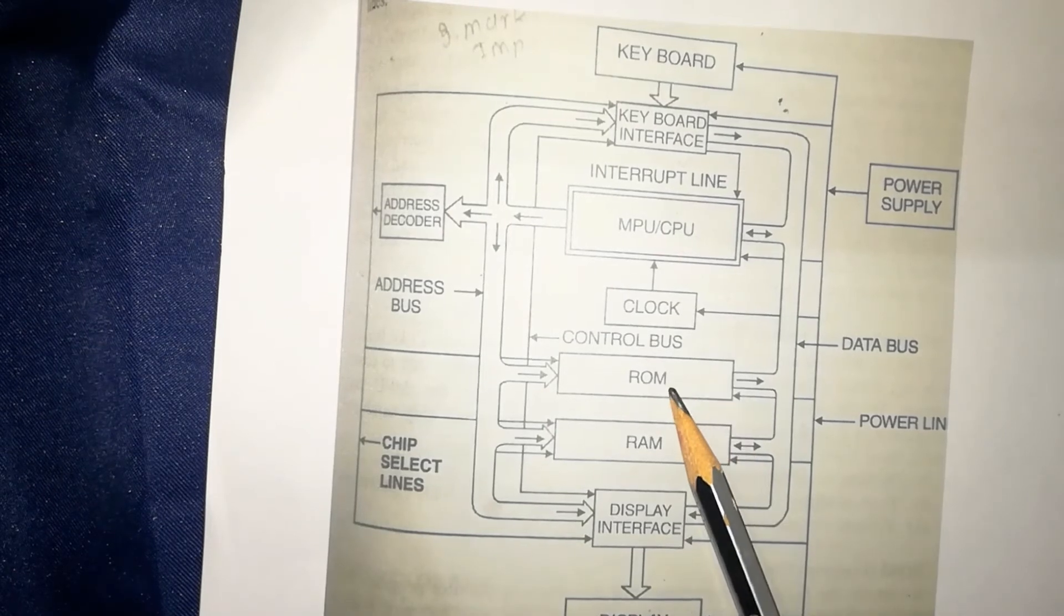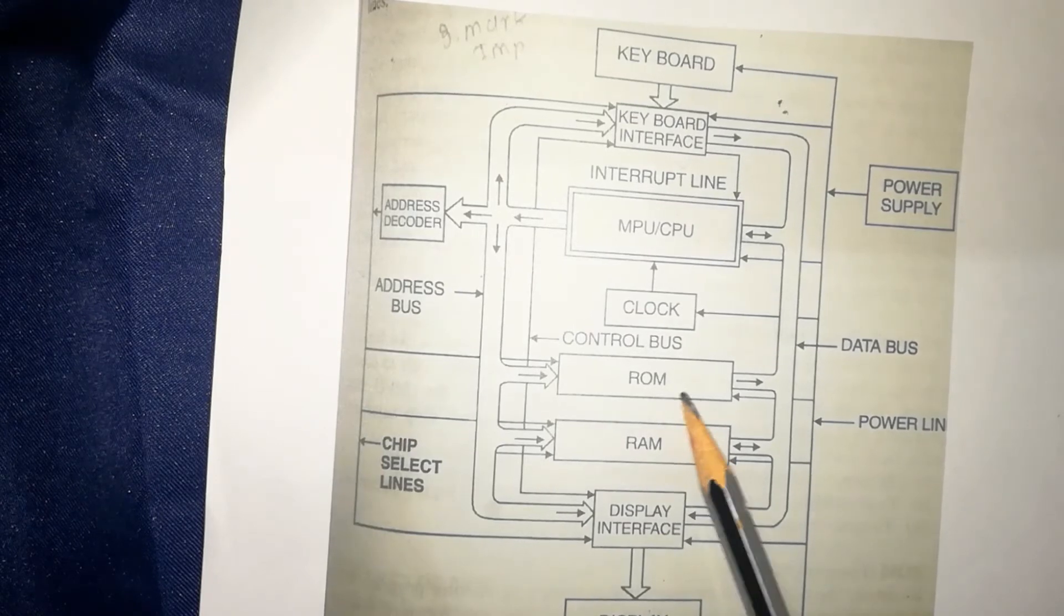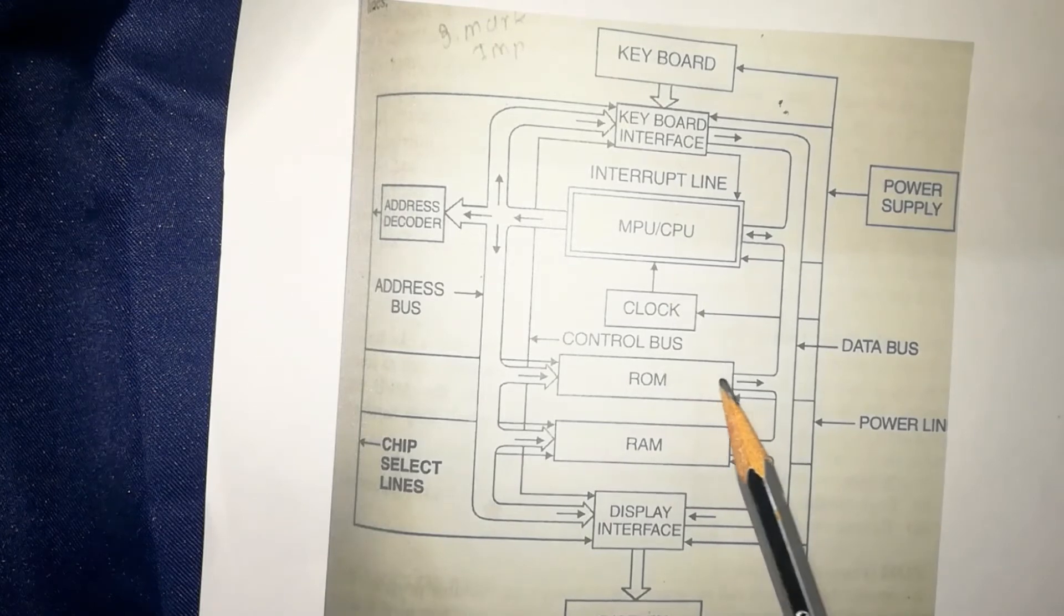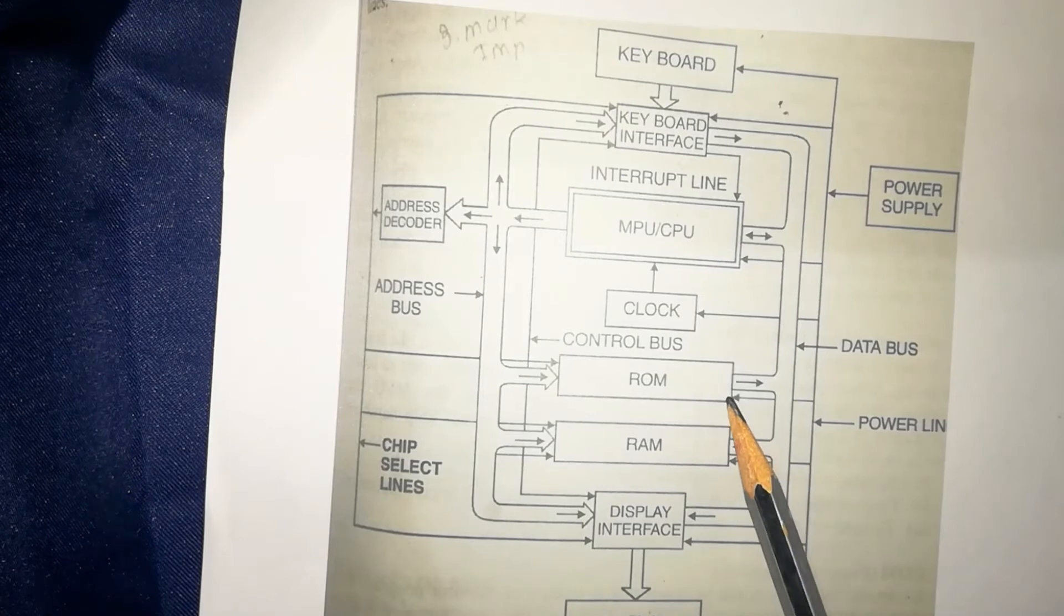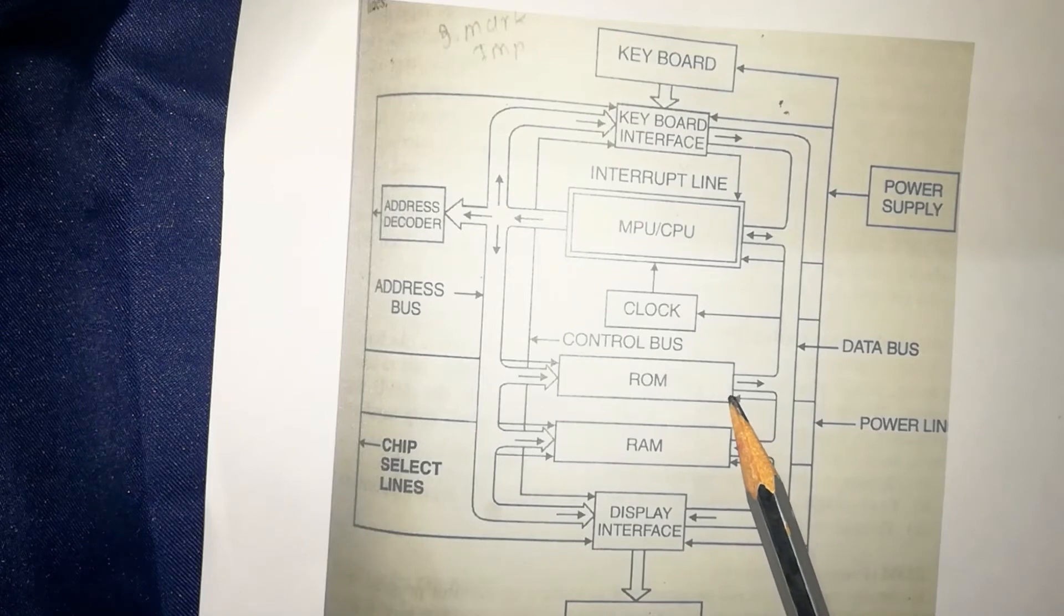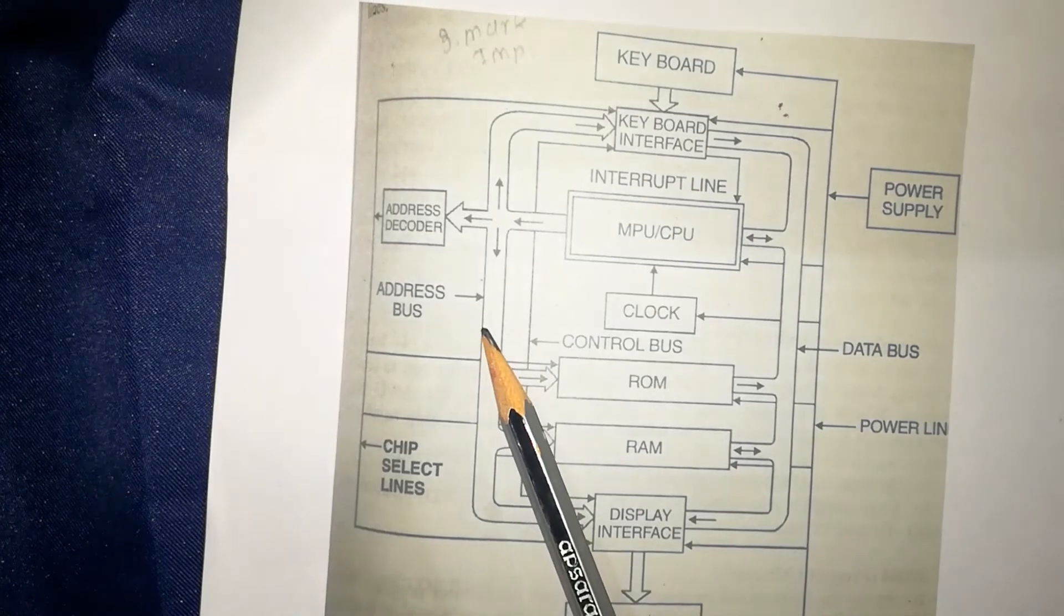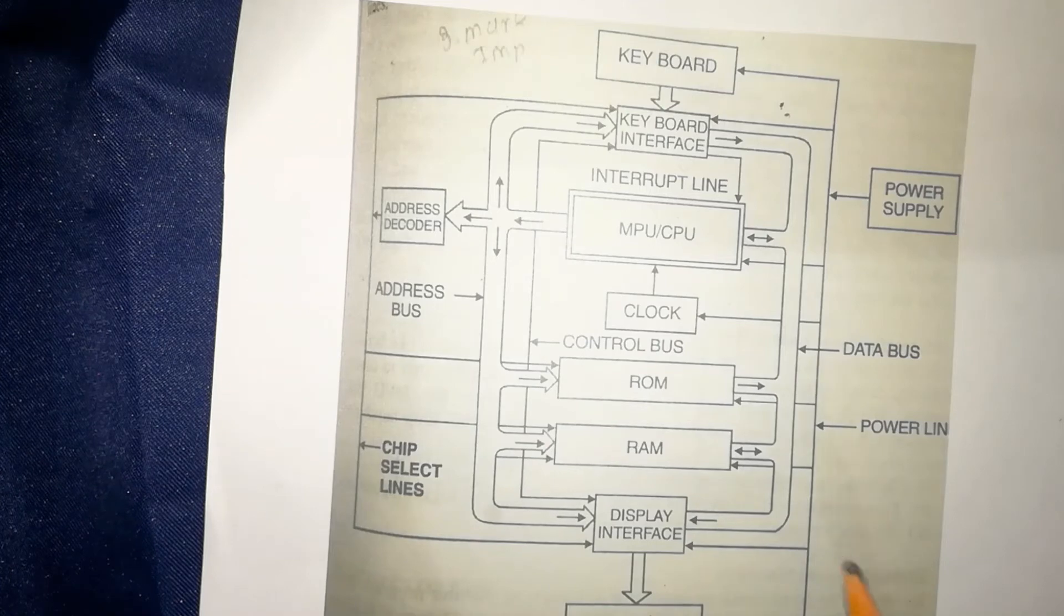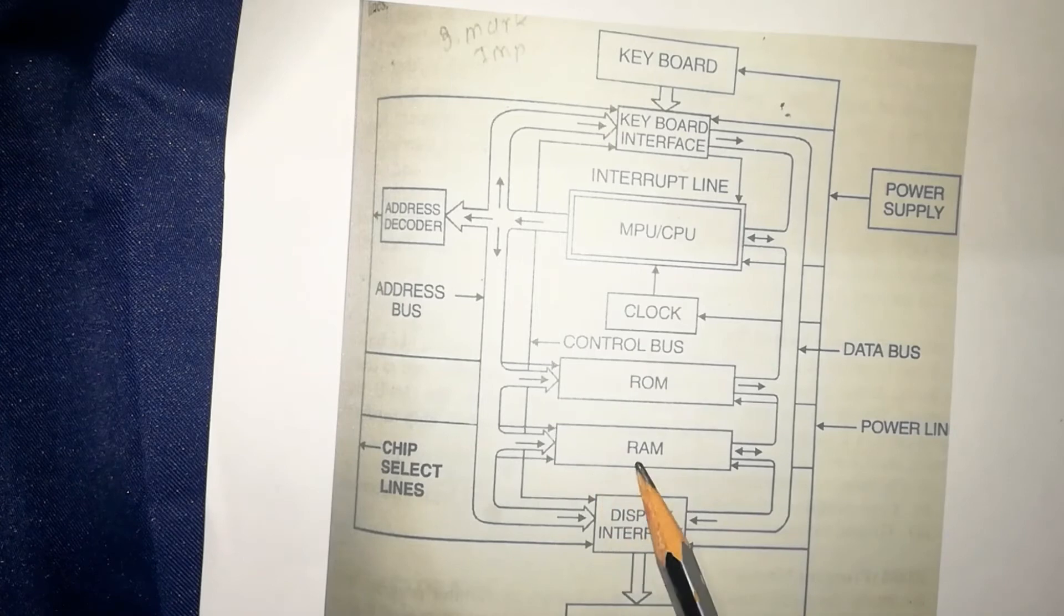Here the next unit is ROM, that is called Read Only Memory. It allows only reading stored information. It is also called as program memory or fixed store. Programs called monitor programs are in ROM. It has address bus, chip select, and read control lines or read signal lines. The next unit is RAM, that is Random Access Memory.